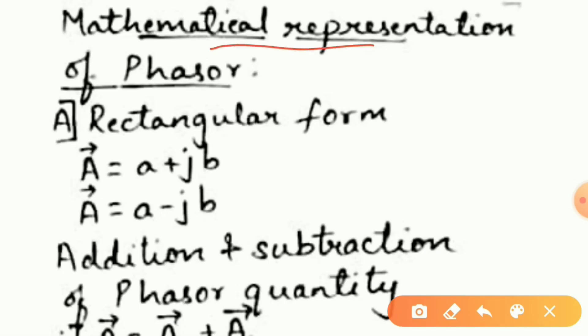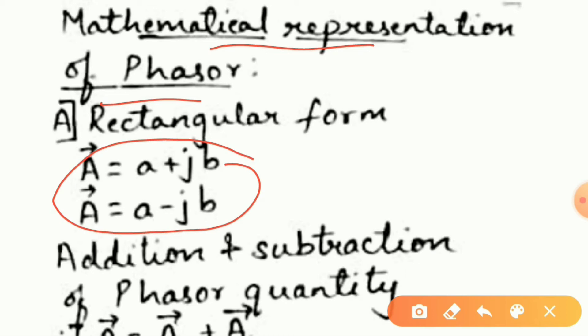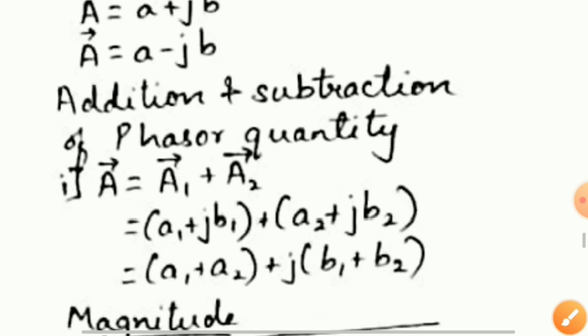Mathematical representation of a phasor quantity is shown here. Let us consider two rectangular equations: a is equal to a plus Jb, and a minus Jb. We will be using these equations for addition and subtraction of phasor quantities.